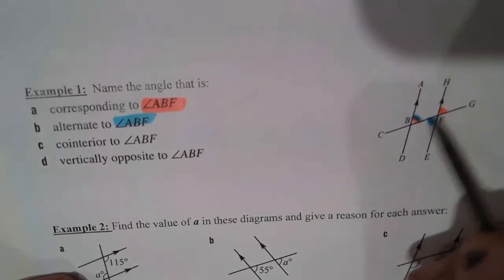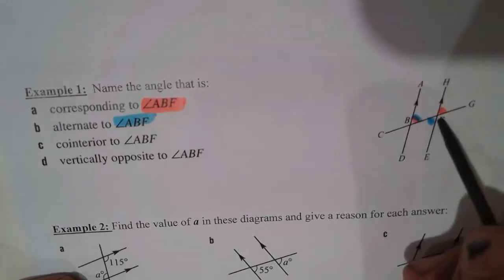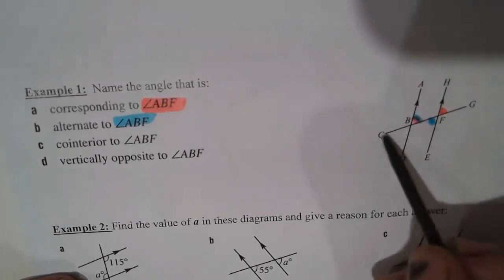So this we could call ∠BFE, or ∠EFB, or ∠CFE, as long as the F is in the middle because that's the vertex, or ∠EFC.